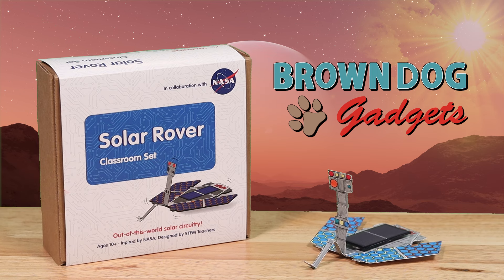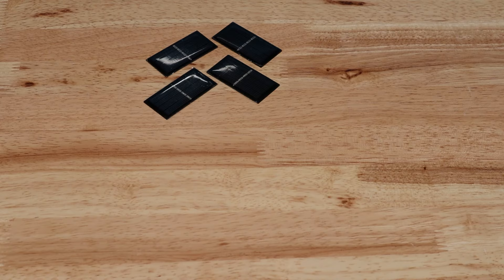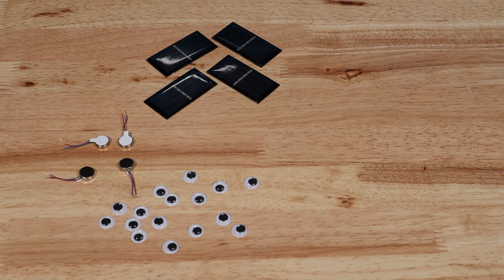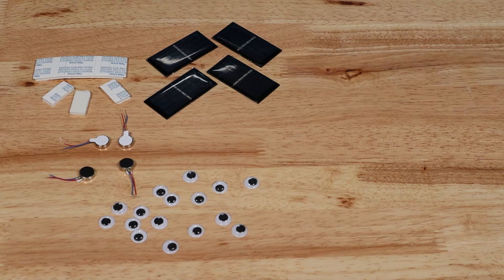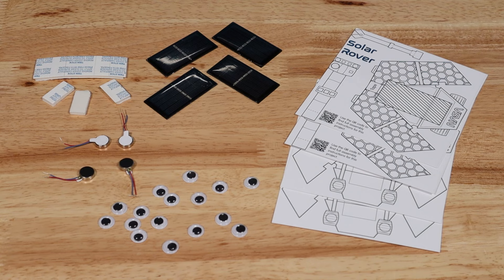Inside the kit, you'll find a quick start guide and all your components, including solar cells, googly eyes, self-sticking motors, foam tape pieces, rover template cards, and a roll of quarter-inch maker tape.